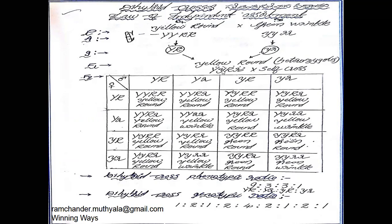The F1 generation in heterozygotic condition contains four types of genes — two in dominant position and two in recessive position. These four types of genes independently develop as gametes during F2 generation formation. Another F1 plant also produces four types of gametes independently, and when these gametes fuse, a total of 16 phenotype combinations are formed in the F2 generation.